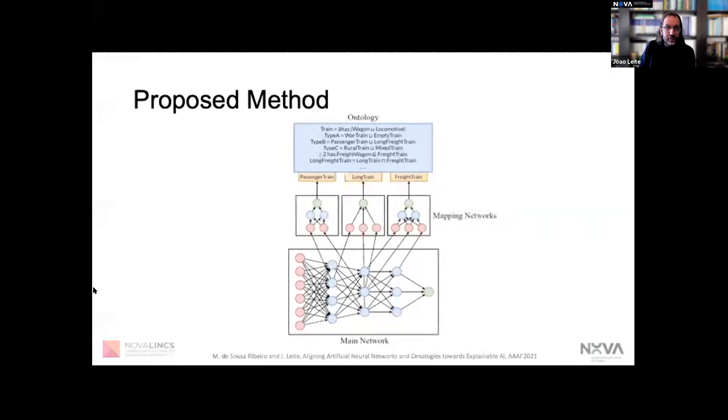We propose to establish mappings from the values of the activations produced by the neurons of a neural network to concepts from a chosen ontology through what we call the mapping networks. These are networks that will be responsible for mapping between the activations of the main network, its internal representation, and concepts from an ontology.